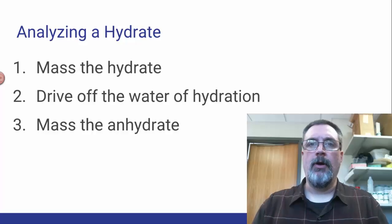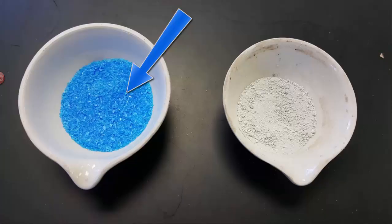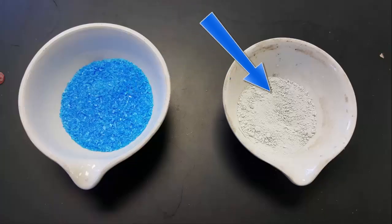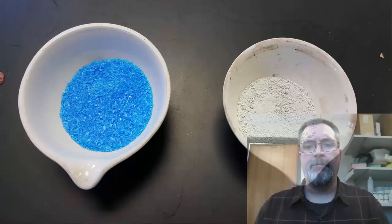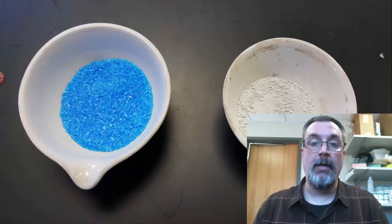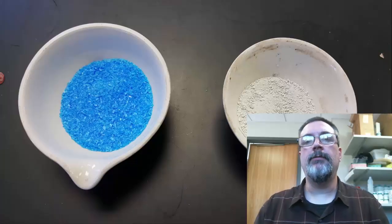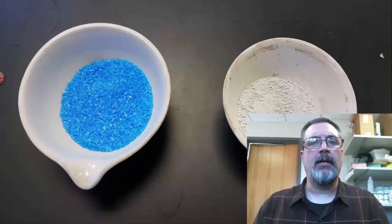How do you know that you've driven off all the water? With copper sulfate, it's really easy, because copper sulfate changes color as you dehydrate it. The blue color of copper sulfate on the left turns to a white powder on the right — that's the anhydrous copper sulfate. You have to be able to see, by looking at it, that all of that blue color is gone. But maybe a color change isn't the most reliable way. Let's look at another hydrate.